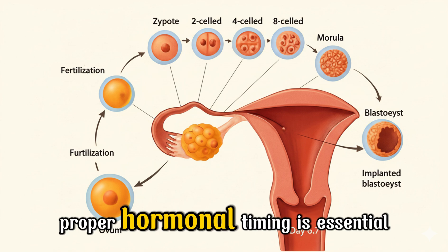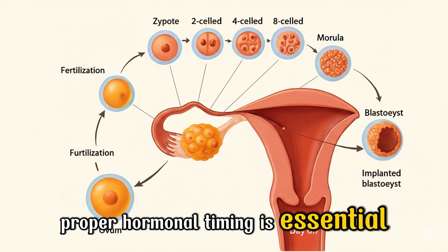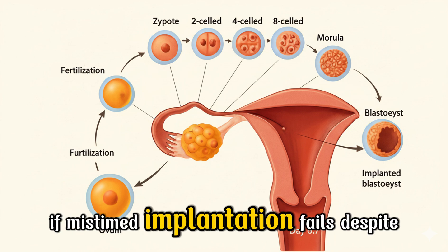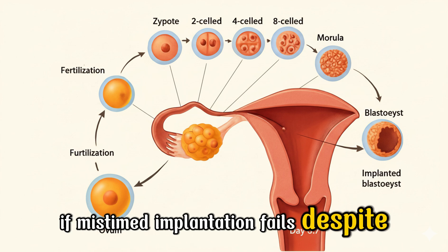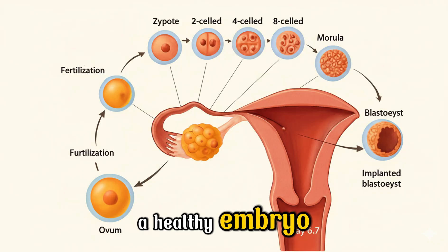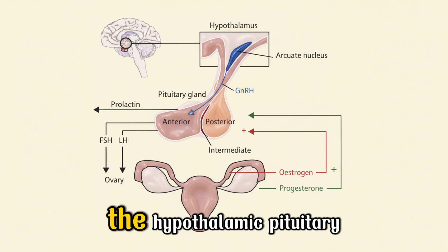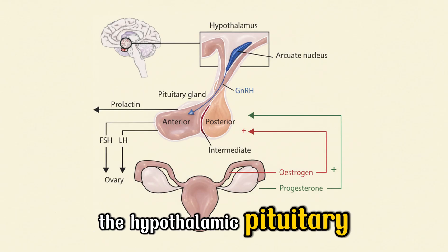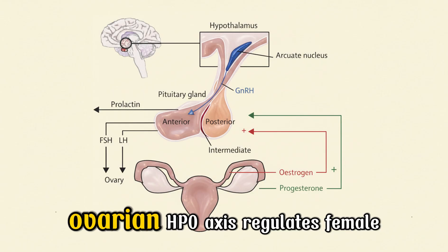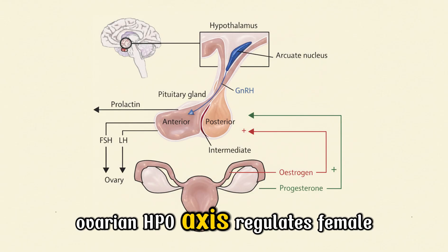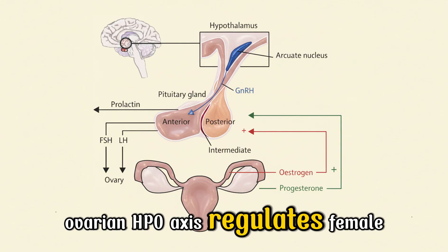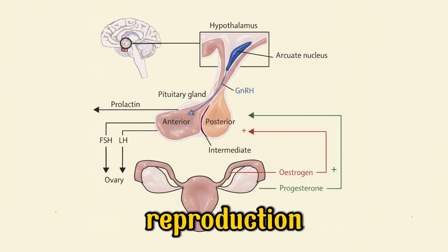Proper hormonal timing is essential. If mistimed, implantation fails despite a healthy embryo and the cycle restarts. The hypothalamic-pituitary-ovarian (HPO) axis regulates female reproduction.